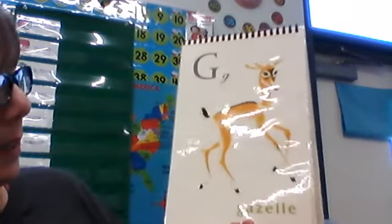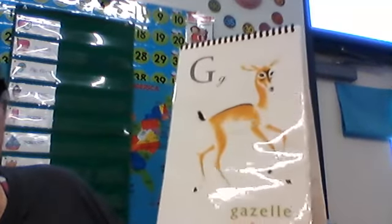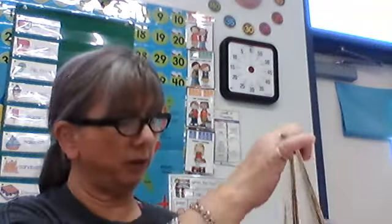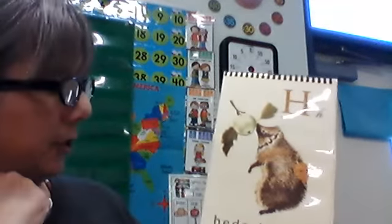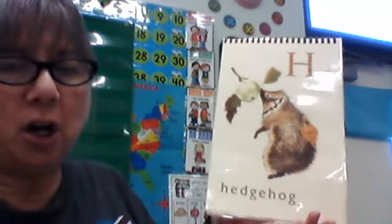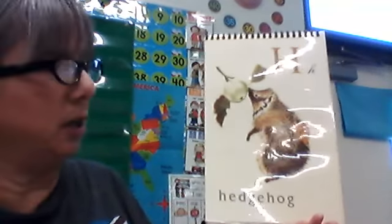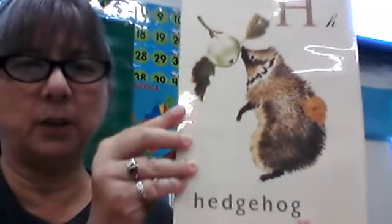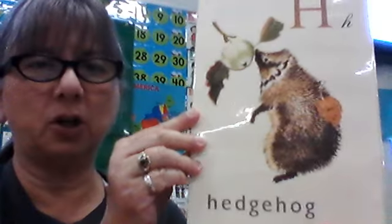Big G, little g, makes the g sound. This is a gazelle. There are some unusual animals that we don't talk about very often in this collection. Big H, little h, makes the h sound. Here we have our word — hedgehog. Is there a better place for me to hold it so you can actually see it? Maybe right there. Hedgehog. I just have to get a little closer.